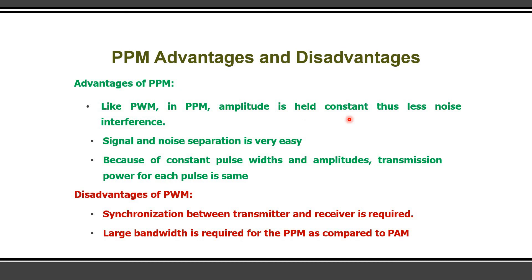The advantages of pulse position modulation are similar to pulse width modulation. Since amplitude is constant in PPM, we can easily eliminate noise — interference domination will be less. By fixing a threshold, any voltage above that threshold is clipped out, improving signal quality. Because of constant pulse width and amplitude, the transmission power for each pulse is the same. In pulse amplitude and pulse width modulation, transmitting power varies, but in PPM the transmitting power is constant.